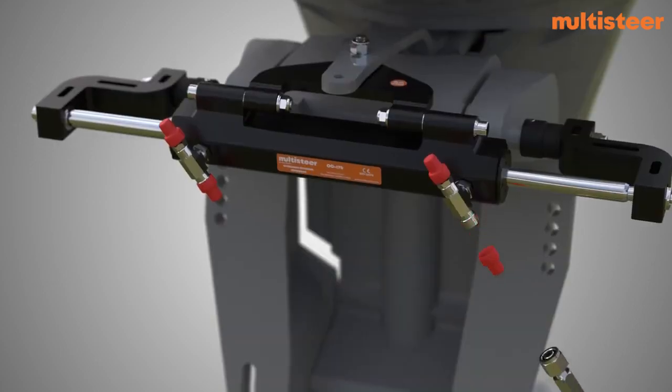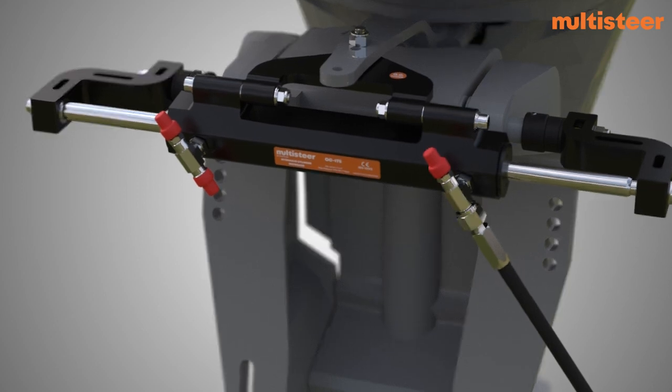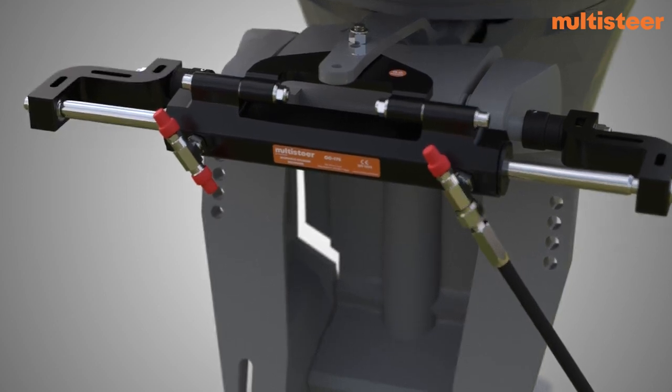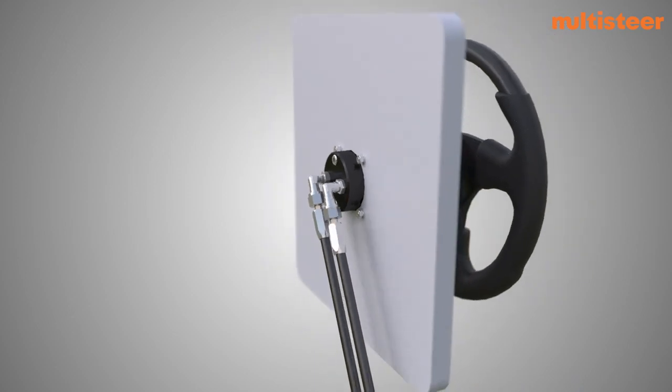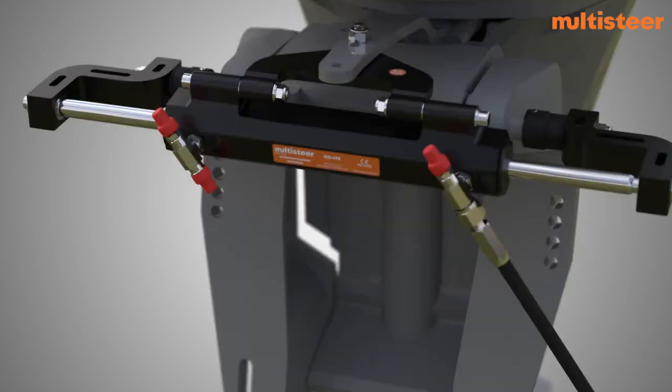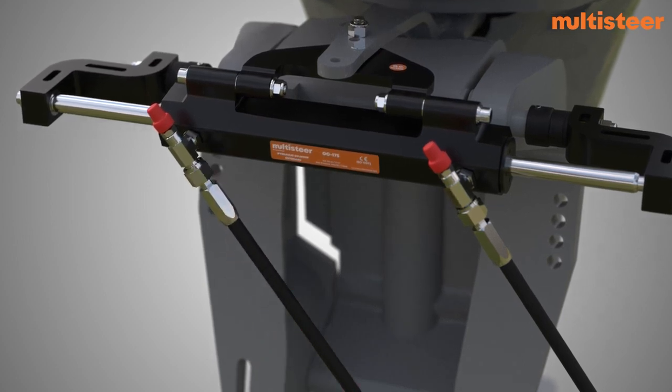Remove the thread protector cap from port side T fitting of cylinder and insert the hose fitting into it. Tighten the hex nut on the hose fitting. Repeat this step to connect the other hose from the port side elbow of the helm to the starboard side T fitting of the cylinder. Ensure that all the hose fittings should be tightened properly.